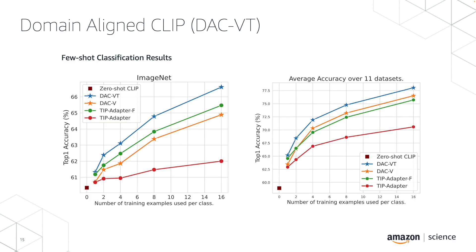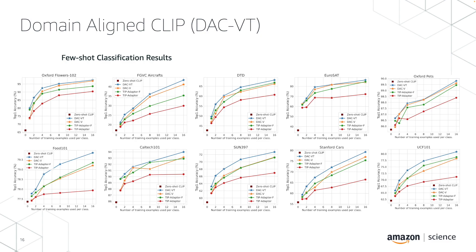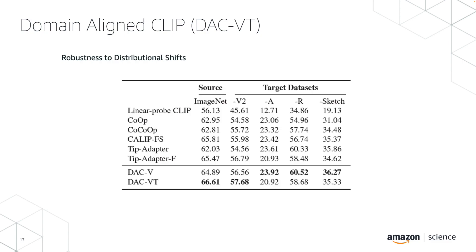Now let's look at the results. On ImageNet, DAC-VisualCache gains roughly 1.5% to 2-3% accuracy over TIP-Adapter-F. Aggregated over 11 different datasets, DAC-VisualCache outperforms TIP-Adapter-F by roughly 2.3% on average, and even DAC-VisualCache alone — just the improved intramodal classifier — also improves by 1%.